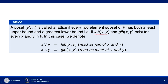This notation is called join of X and Y, so join of X and Y is the least upper bound of X and Y. This notation means join of X and Y; this other notation means meet of X and Y. Meet of X and Y is the greatest lower bound of X and Y.